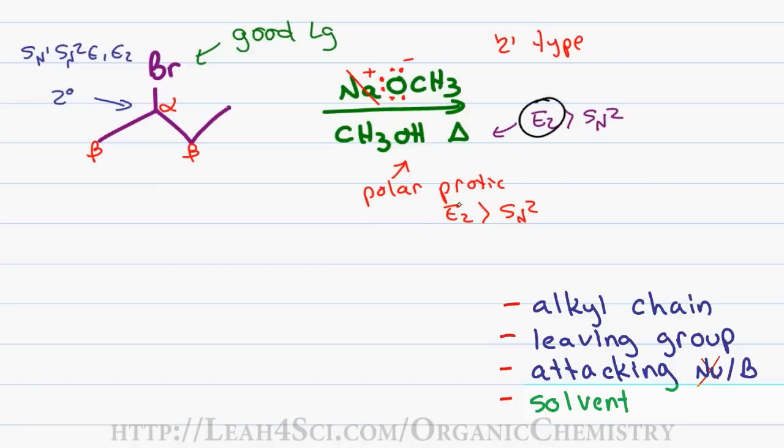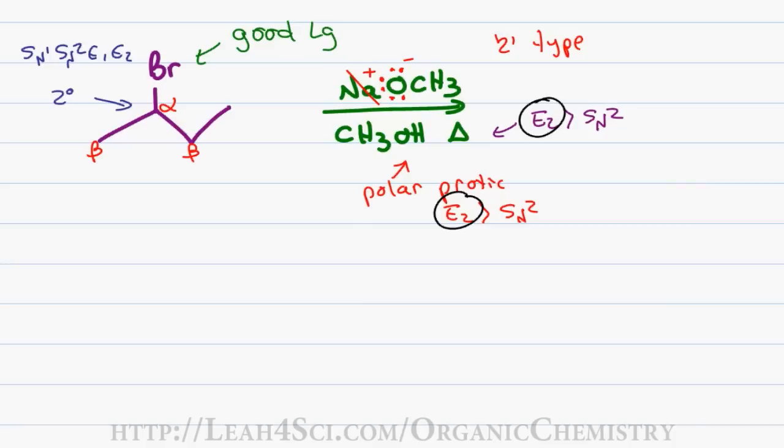Looking at all of this together, we see the E2 reaction is favored for this molecule. The next question is which of the beta carbons to attack for the elimination reaction. Let's redraw the molecule and identify the hydrogens individually. We have a primary beta carbon which has three beta hydrogens and we also have a secondary beta carbon that has two beta hydrogens.